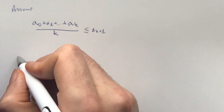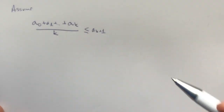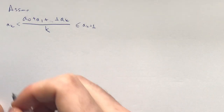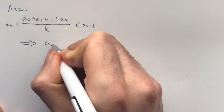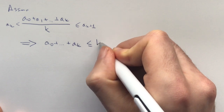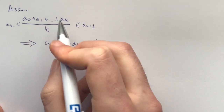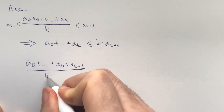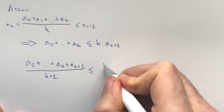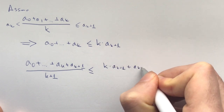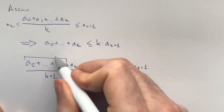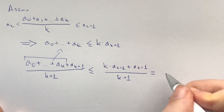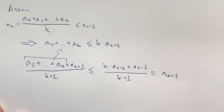Assume this holds for some k, and try to prove the problem statement never holds again. From this assumption, we have a_0 plus ... plus a_k is less than or equal to k times a_{k+1}. For the next term, (a_0 plus ... plus a_k plus a_{k+1}) over (k+1) is less than or equal to (k times a_{k+1} plus a_{k+1}) over (k+1), which is equal to a_{k+1}. So the left-hand side of the desired inequality is not satisfied at k+1.